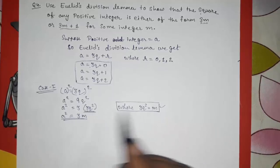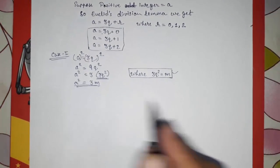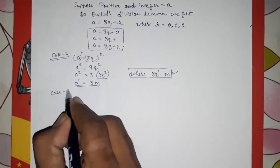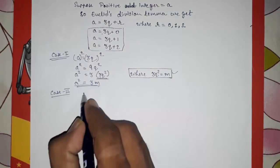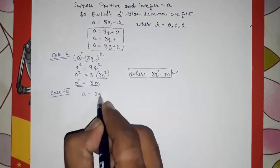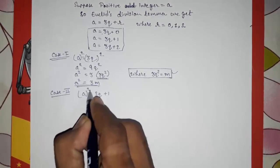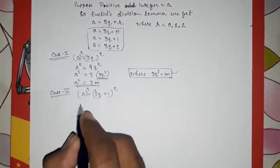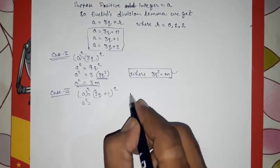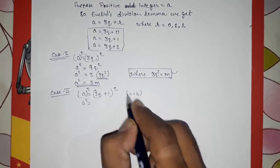Now Case 2: a = 3q + 1. Again squaring both sides, we apply the identity (a + b)² = a² + 2ab + b².